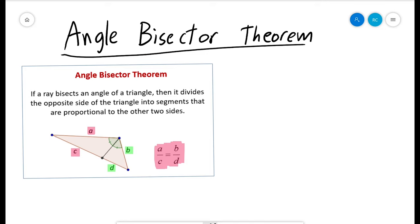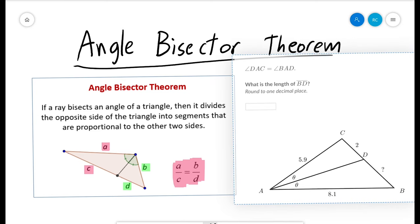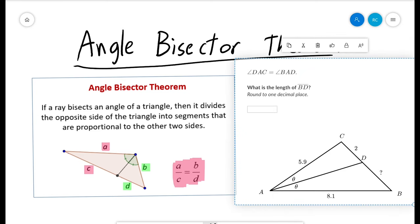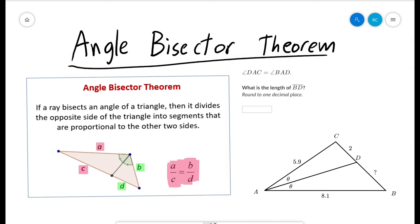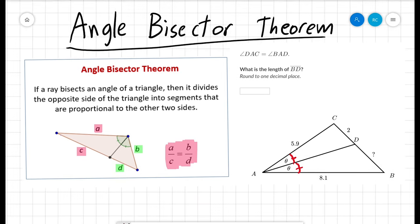Okay, so let's take a look at a couple of problems on Khan Academy itself. Okay, so it says that angle DAC, that's this angle right here, is congruent to angle BAD, that's this angle right here. So those are congruent, which means we've got the angle bisector theorem.